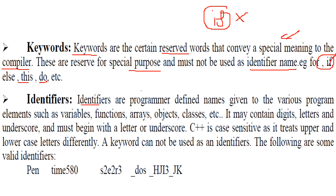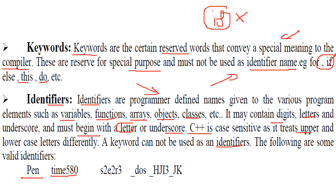Identifiers. Identifiers are the names which you give to variables, function names, arrays, and objects in classes. You need a certain way to identify them, and identifiers do exactly that. Identifiers may contain digits, letters, and underscores, but must begin with a letter or an underscore — you cannot start with a number. C++ is case sensitive, so uppercase is very different from lowercase. A keyword cannot be used as an identifier. Valid identifiers include names like 'pen', 'time', '580' — starting from a letter or underscore, using alphanumeric characters.